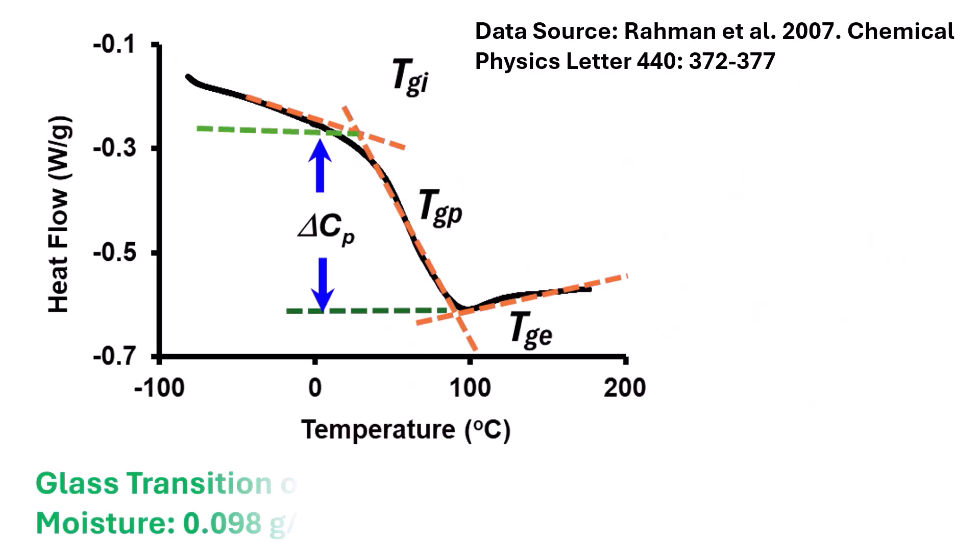In this slide, we could observe the glass transition of spaghetti as measured by DSC. In reality, a curved corner is observed instead of a sharp corner. And in this case, commonly crossing points of the two lines are considered the onset and end glass transition temperature. We could also determine del Cp that is specific heat change at glass transition.